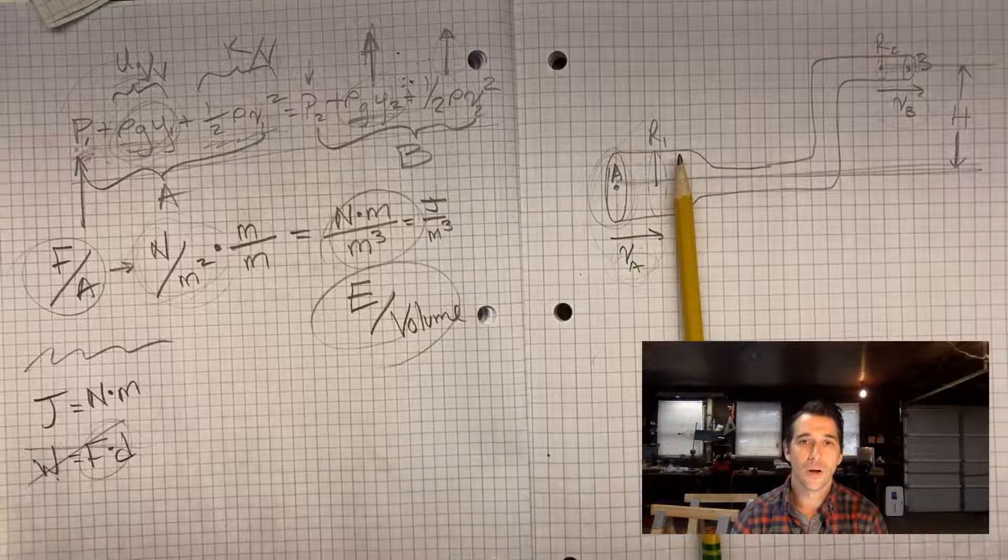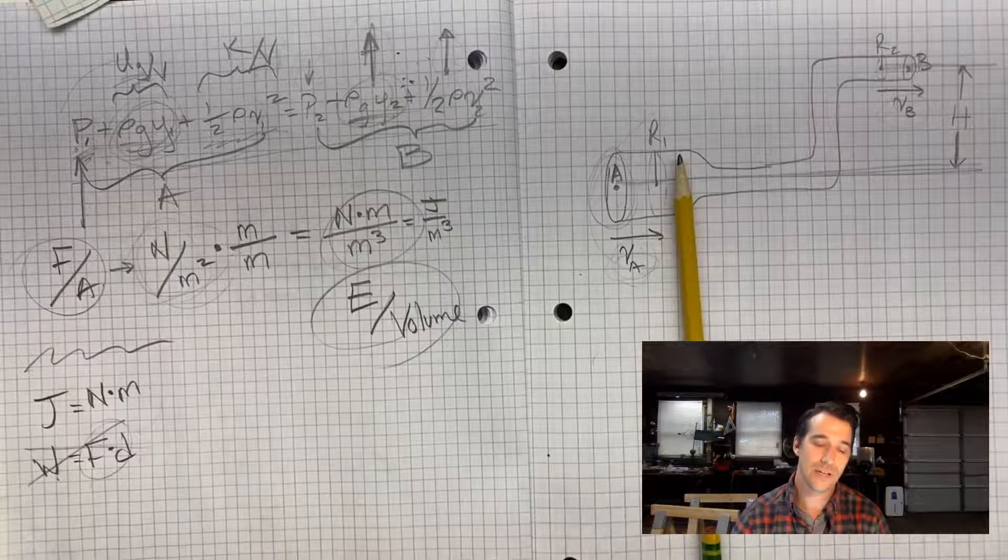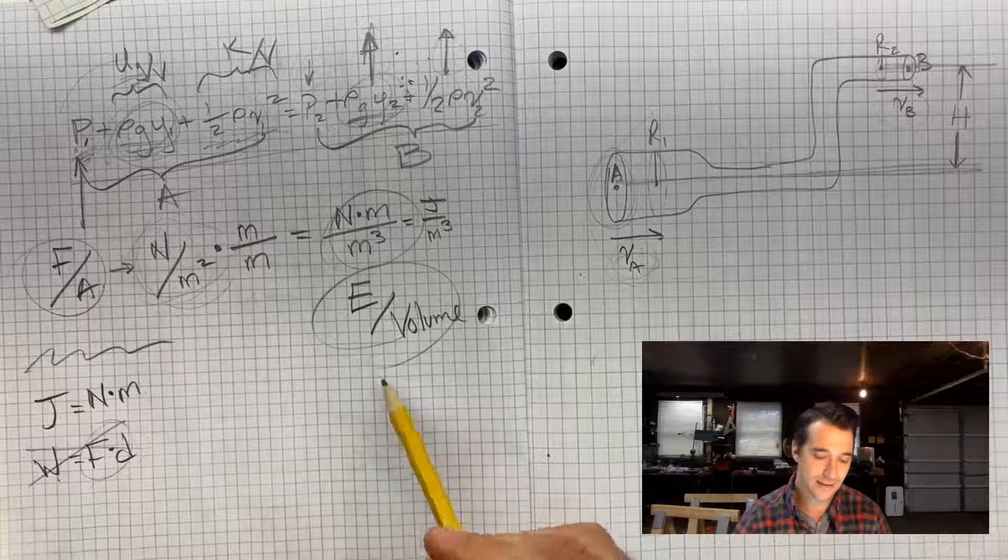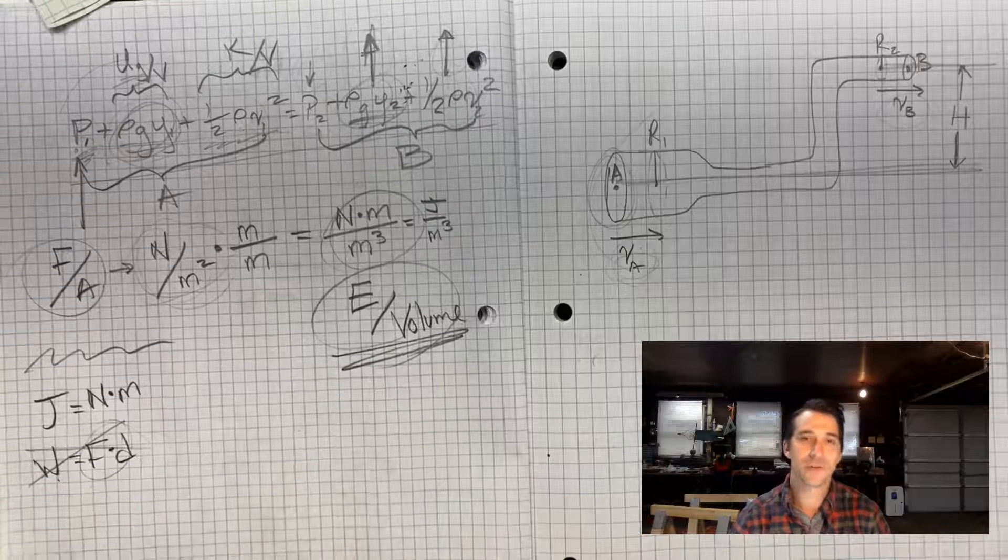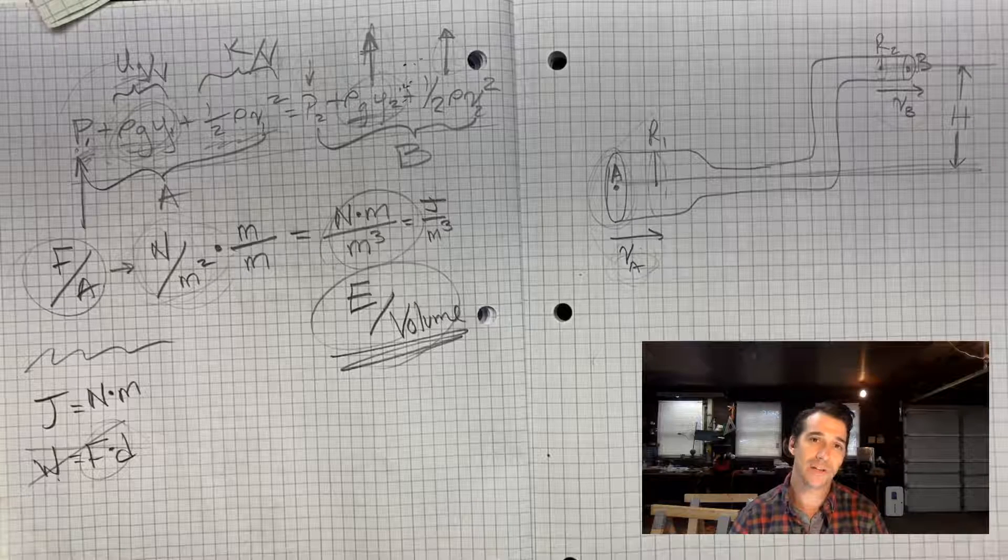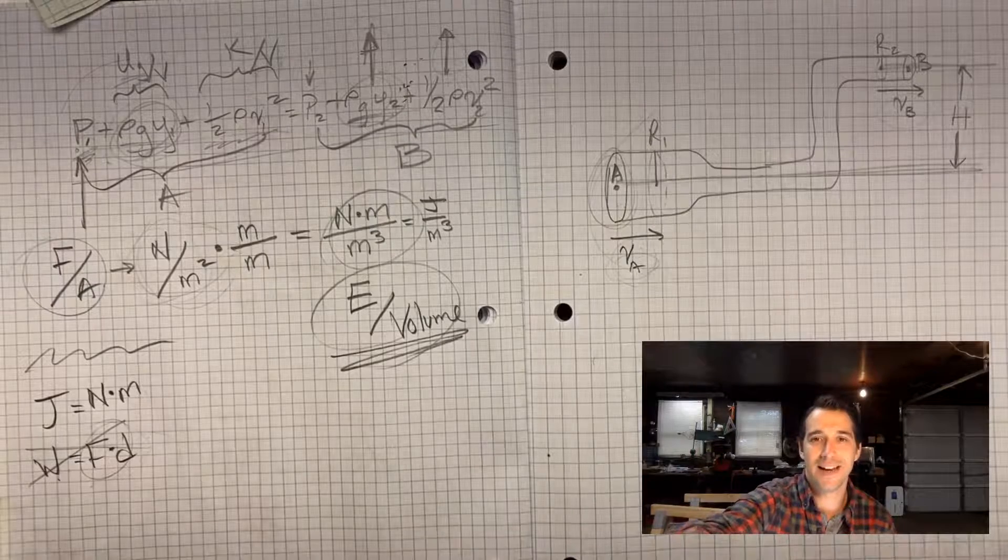So hopefully that helps give you a little bit deeper understanding of Bernoulli's equation, gives you a couple of those tricks to help you understand units a little better and realizing that Bernoulli is nothing more than conservation of energy. But we're just looking at energy per unit volume. Hope that helps. Take care. See you again on the next video.